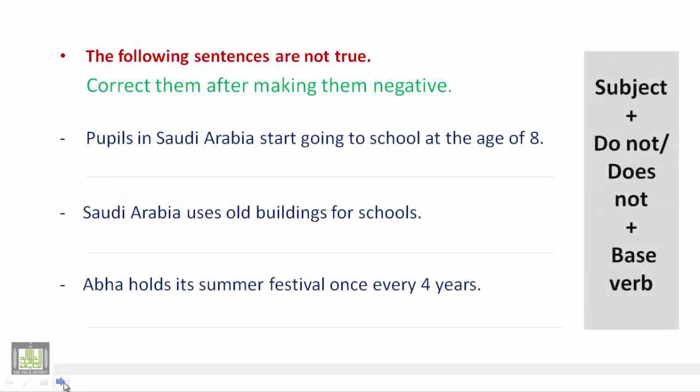Now we have sentences that do not have a verb 'to be' as the main verb — we have different types of verbs. في هذه الجمل نستعرض أنواع مختلفة من الأفعال مغايرة لما ورد في الشريحة السابقة، التي كانت عبارة عن أفعال الكون. In this slide we have different verbs — we call them in English 'lexical verbs.' For example, in the first sentence we have 'start,' in the second one we have 'uses,' and in the last one we have 'holds.'